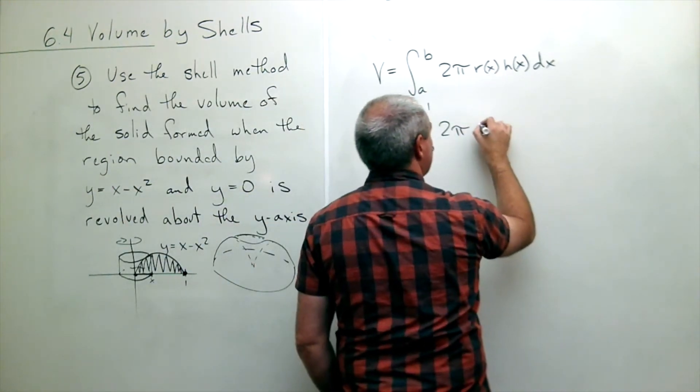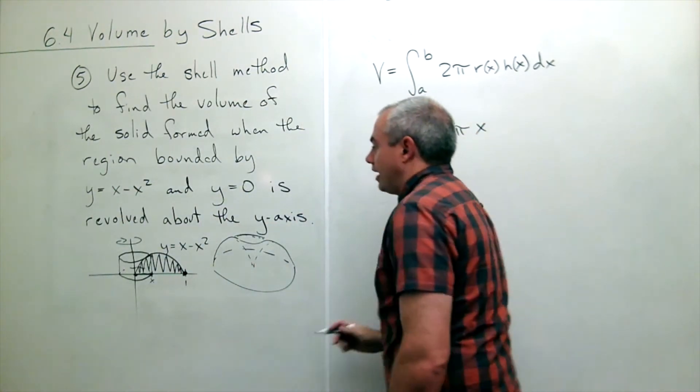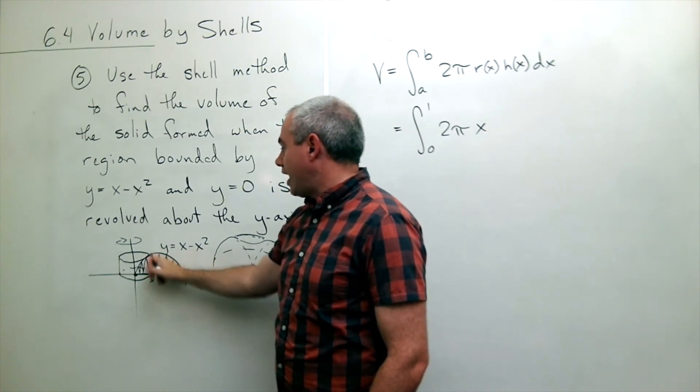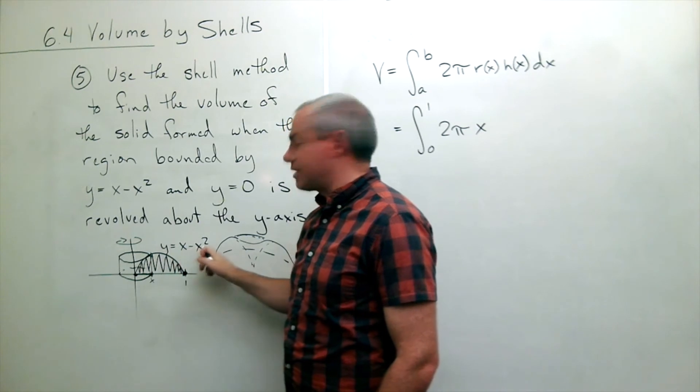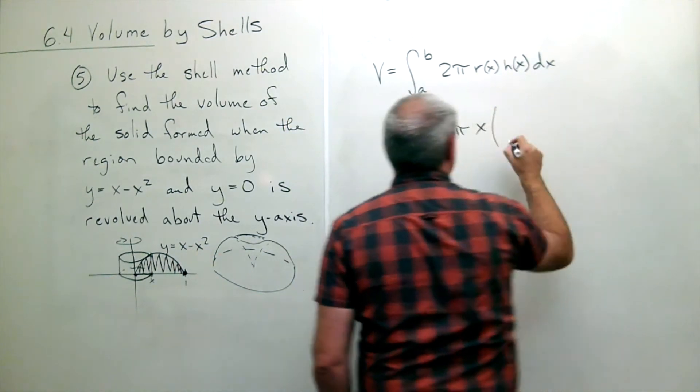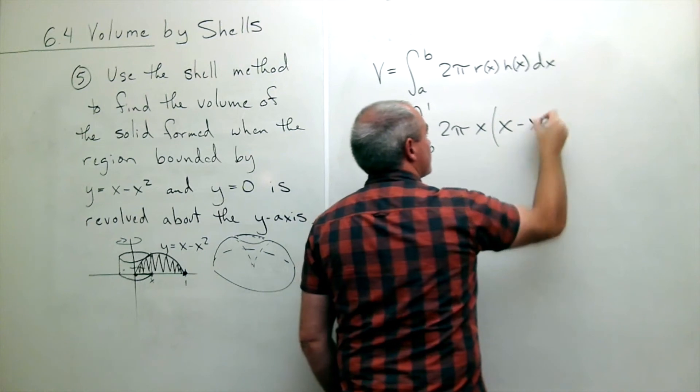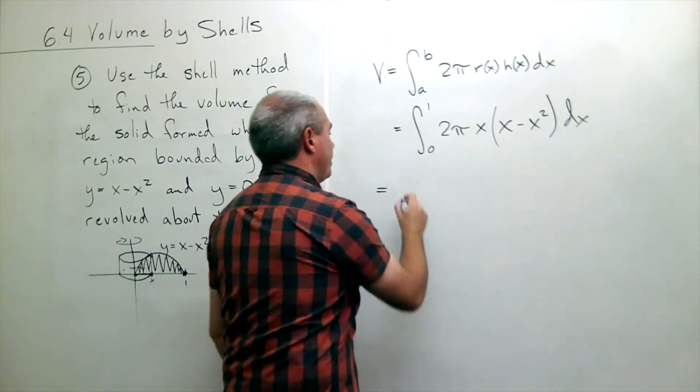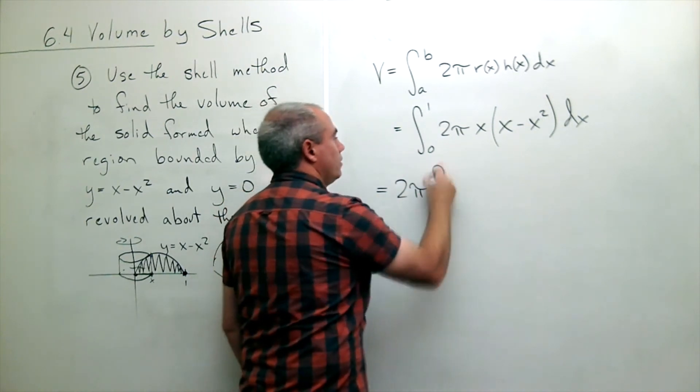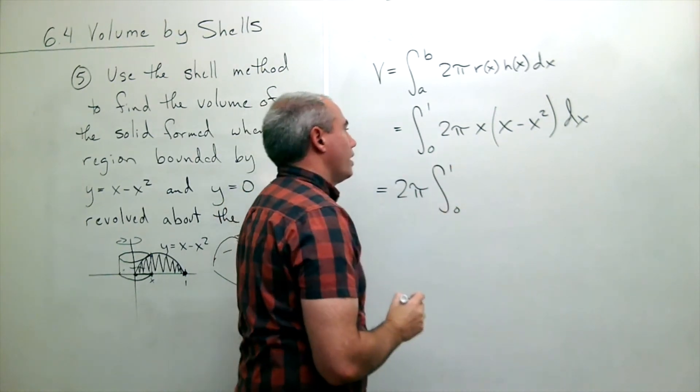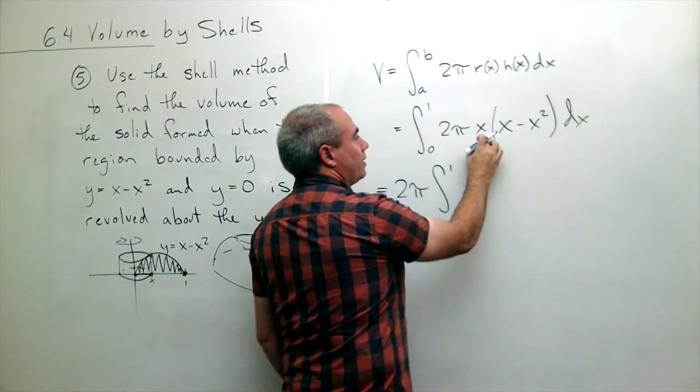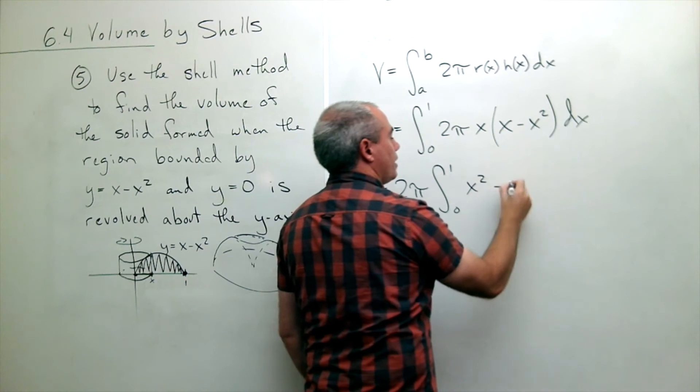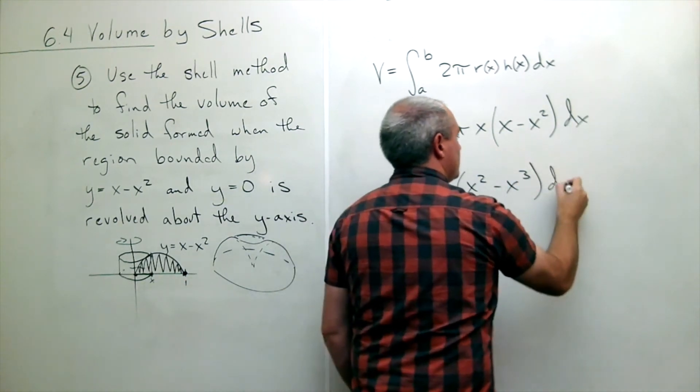And then the height of that cylinder is the functional value. So the height of my cylinder is x minus x squared. So let's write that in, x minus x squared dx and so what I end up with is I pull out the 2 pi, I've got integral from 0 to 1 of I pulled out the 2 pi already, let's multiply the x through. So I get x squared minus x cubed dx.